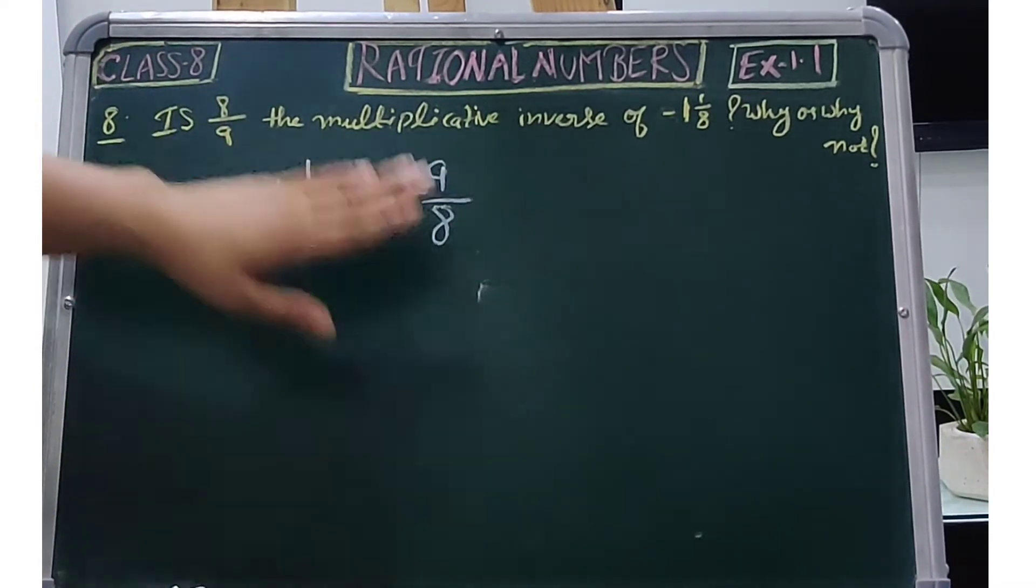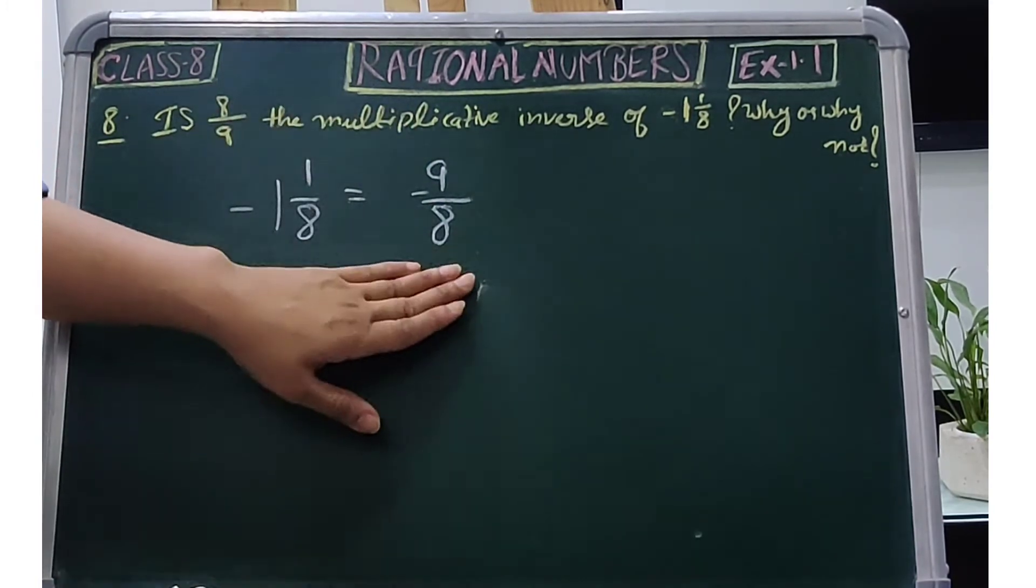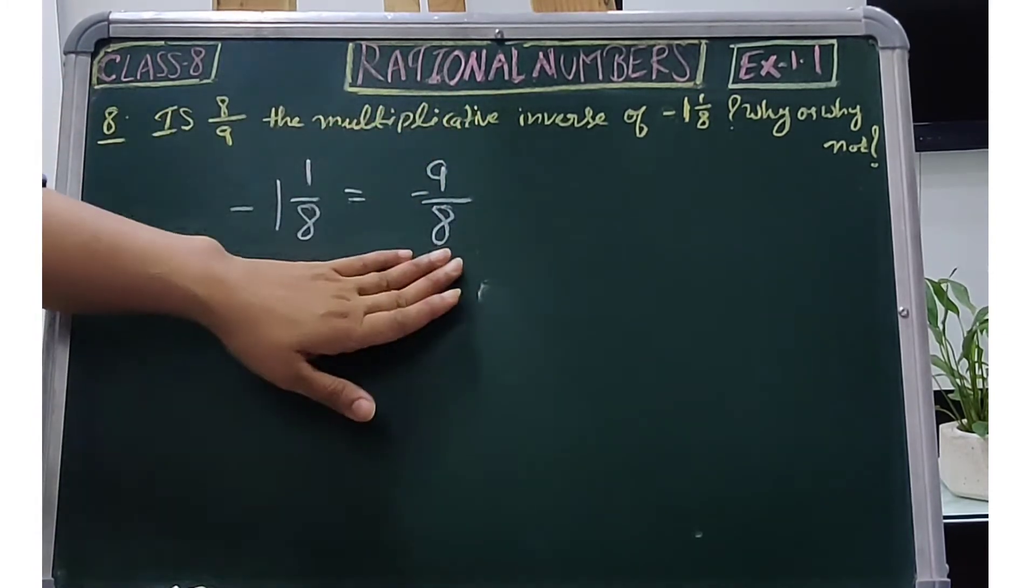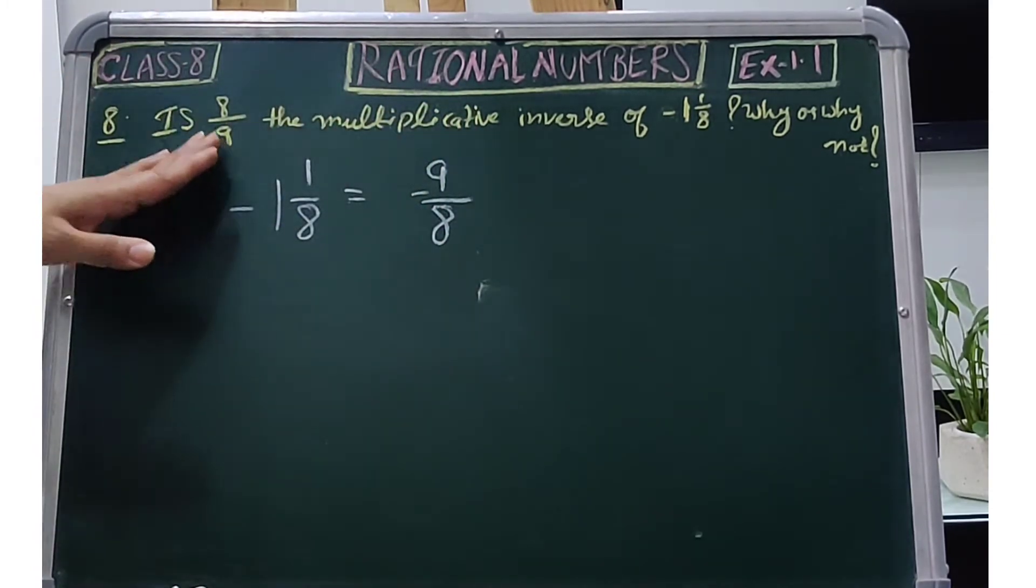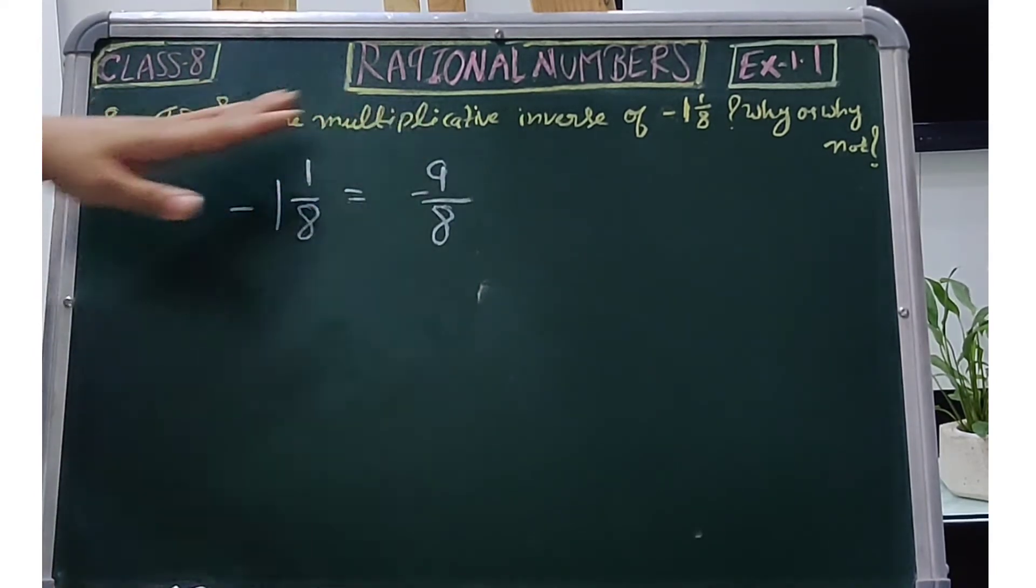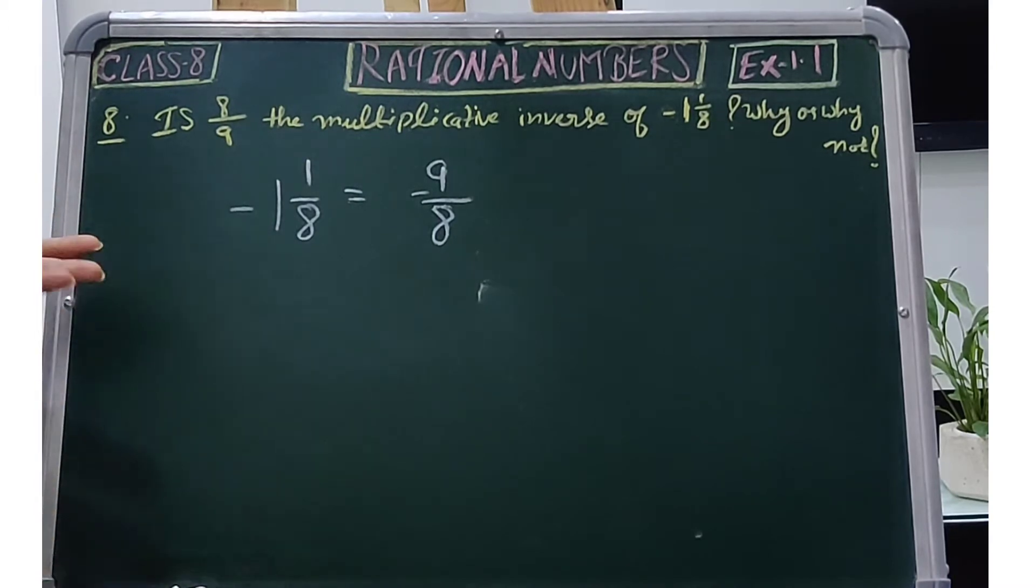Now we have to prove that 8/9 is the multiplicative inverse of -9/8. What is the multiplicative inverse of this number? If we multiply this number, then our product should be 1. If it is 1, it will be the multiplicative inverse of this number.